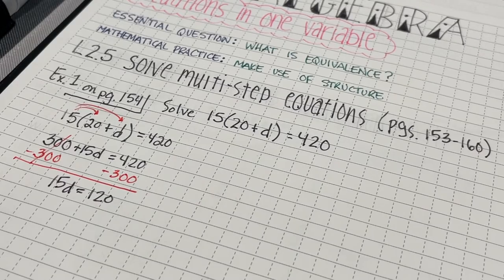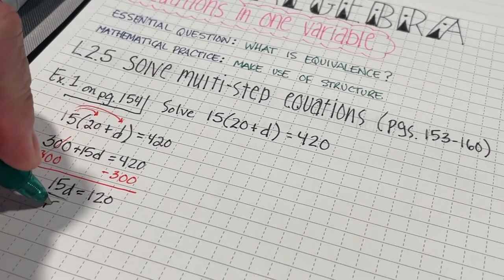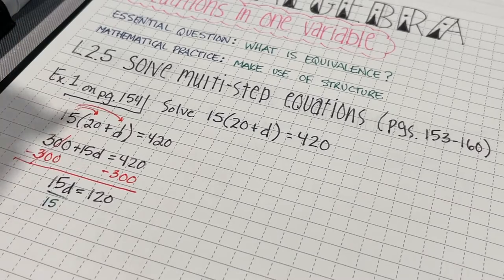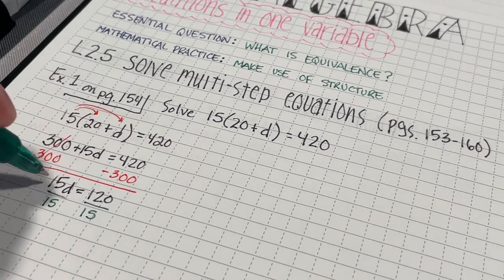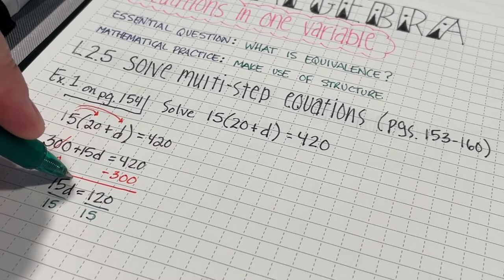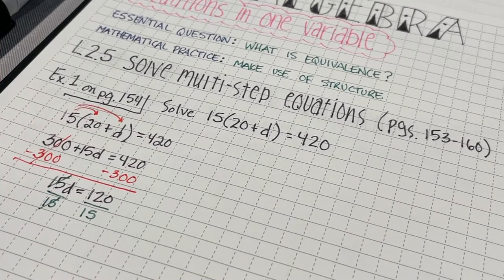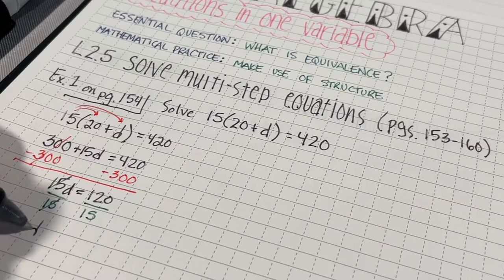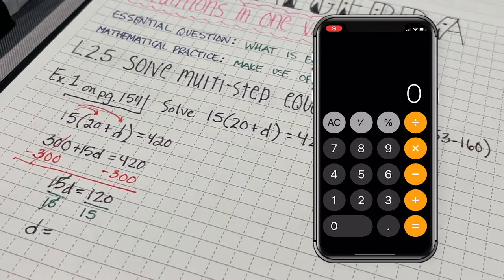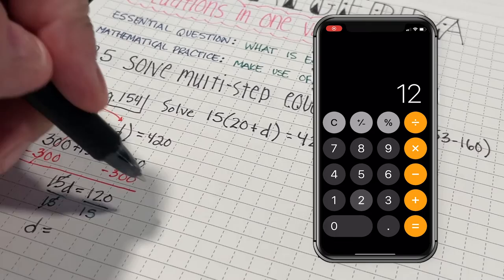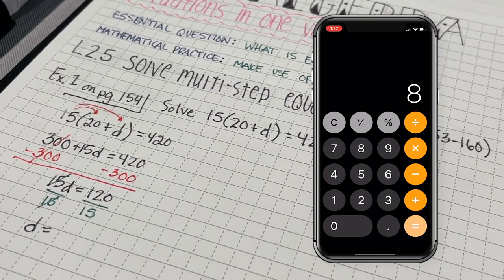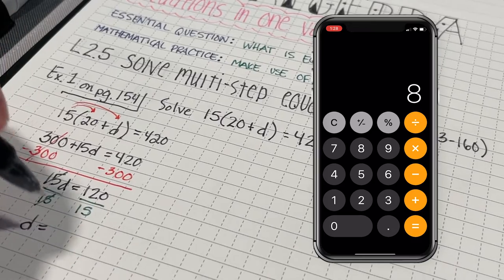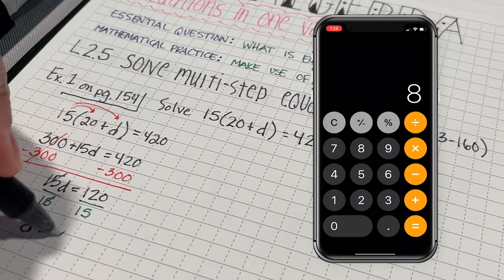Now, my next step is that I'm going to divide both sides of my equation by the coefficient of D, which is 15. 15D divided by 15 is just going to be D, and then 15 goes into 120, it looks like 120 divided by 15 is 8.